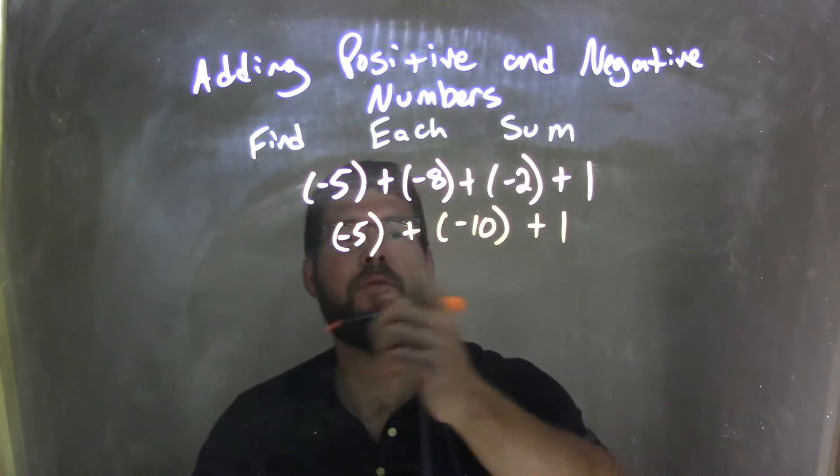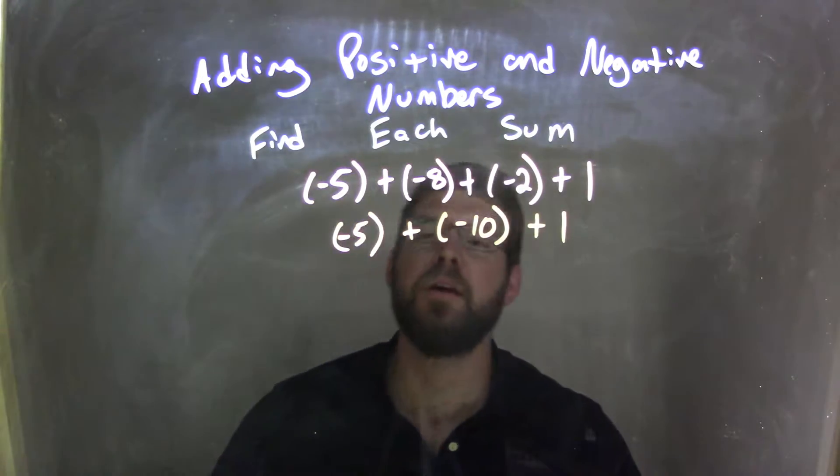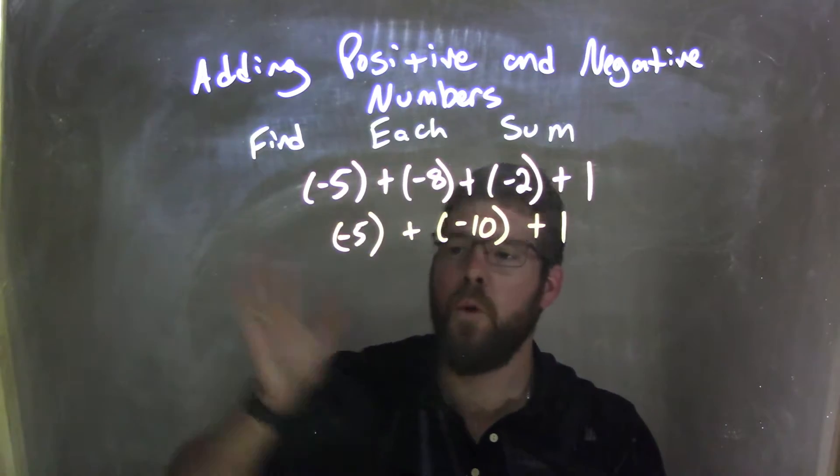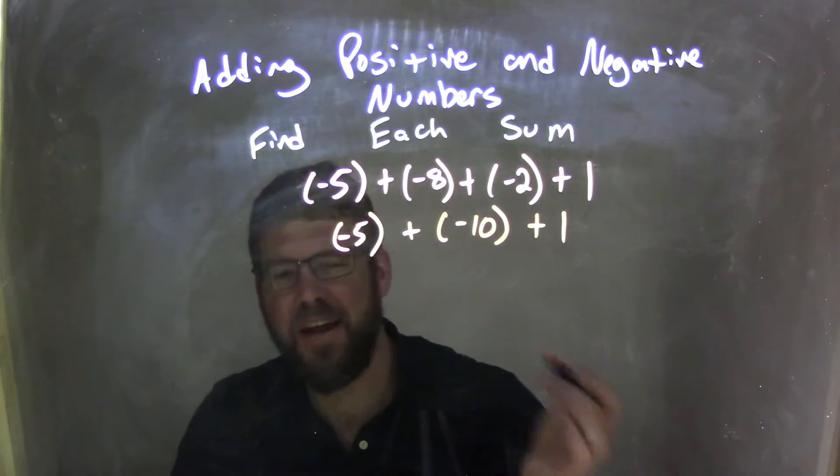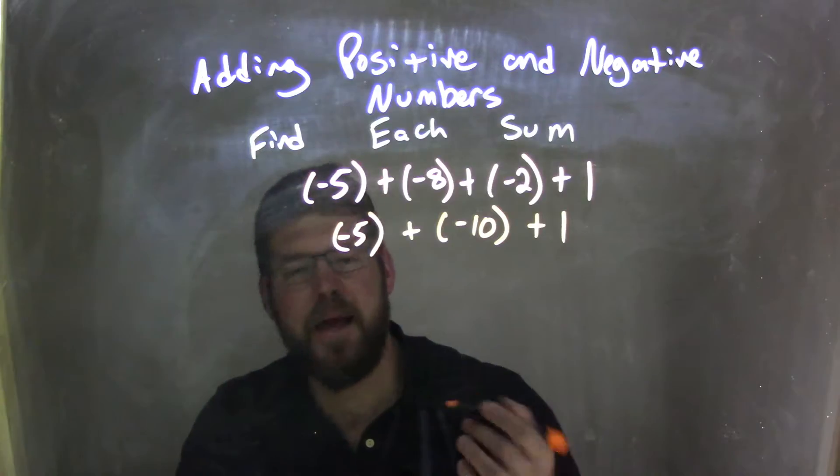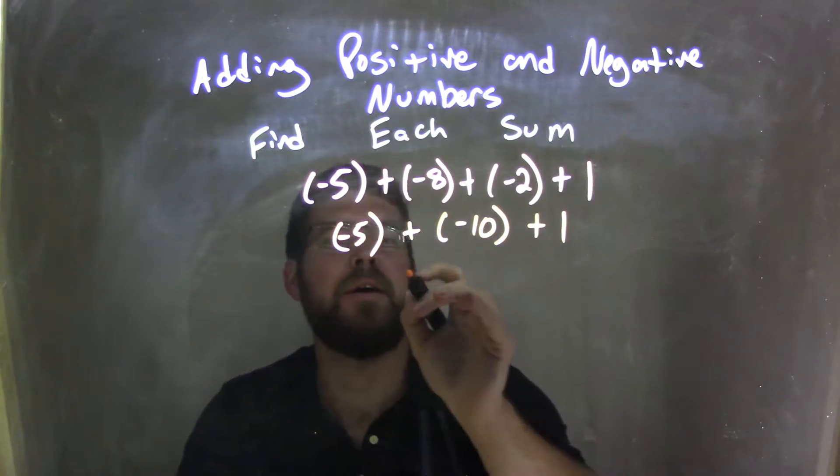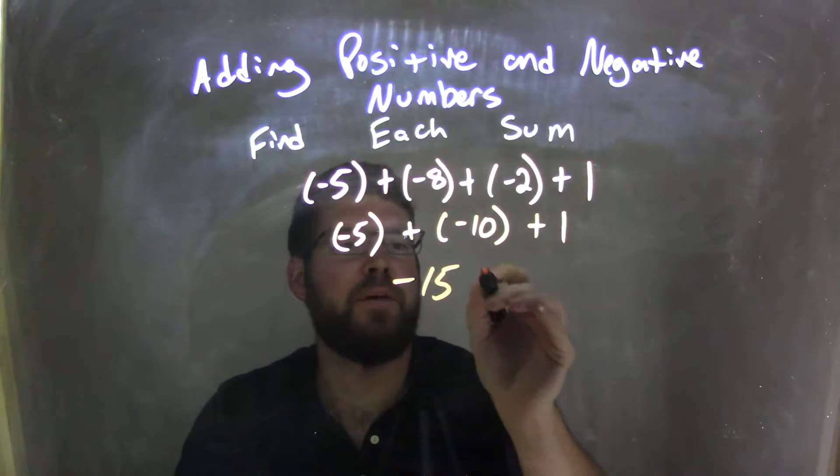Well, now it gets a little simpler. We have negative 5 plus negative 10 first. That's an easy one. They're more in the negative direction, and it's kind of just like positive numbers, just make it negative, right? Because two negatives add up to be another negative. We have negative 15 plus 1.